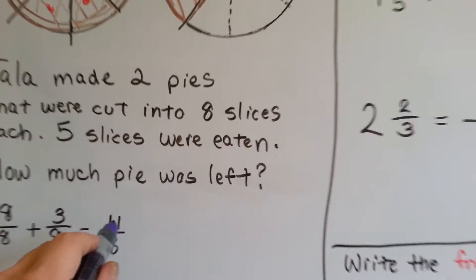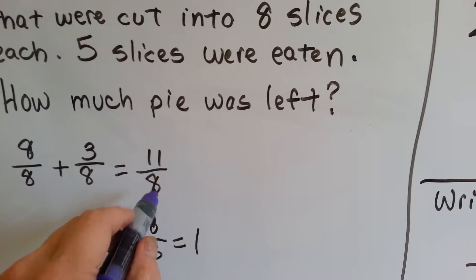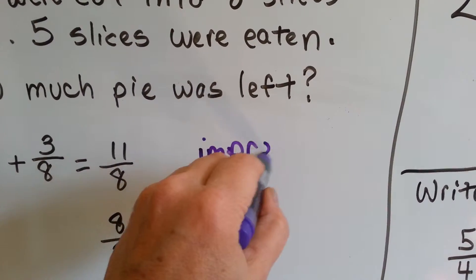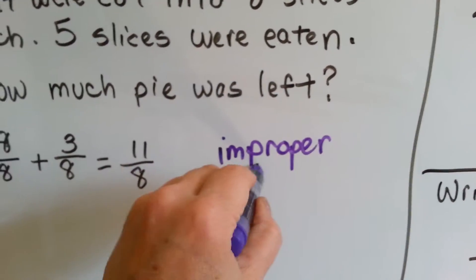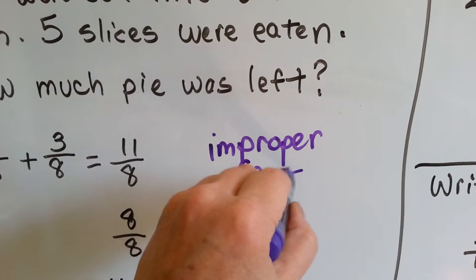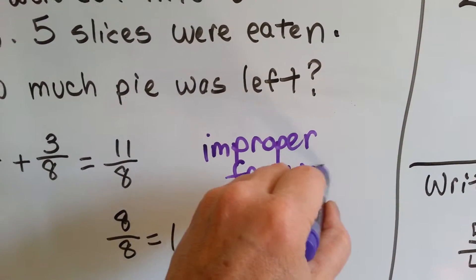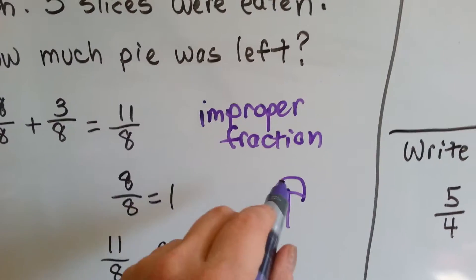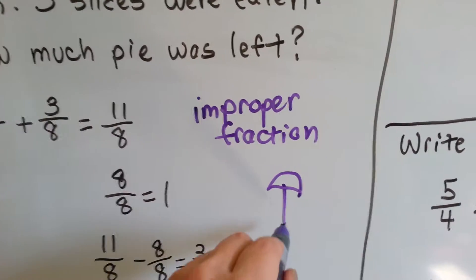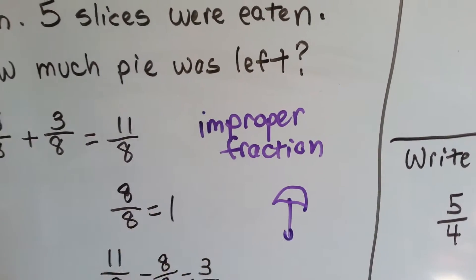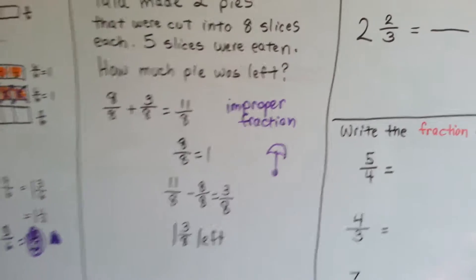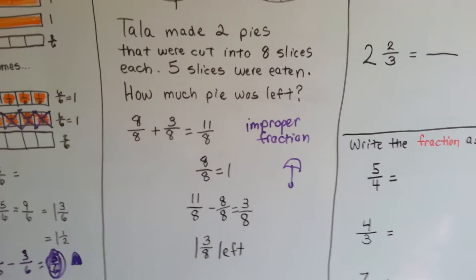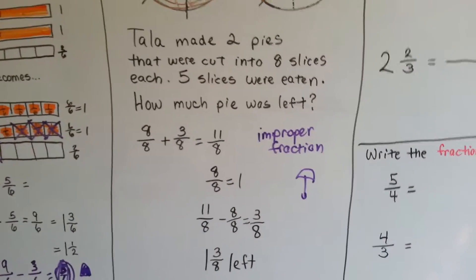When the numerator is bigger than the denominator, it's called an improper fraction. Some people call it an umbrella fraction because the top is bigger than the bottom — it looks like an umbrella. But they're called improper fractions when the numerator is bigger than the denominator.